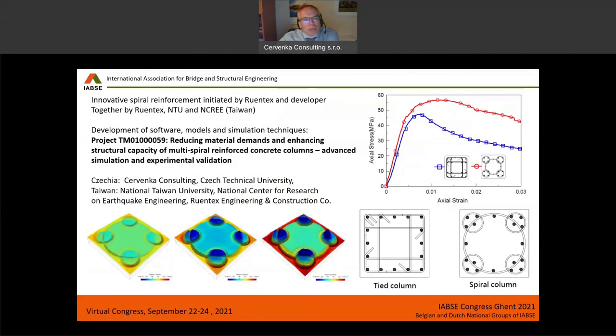I'm talking about results which were obtained in a project funded by Czech technological agency on spiral reinforcement which has been developed in Taiwan by company Ruentex in cooperation with NTU and NCREE Taiwan.